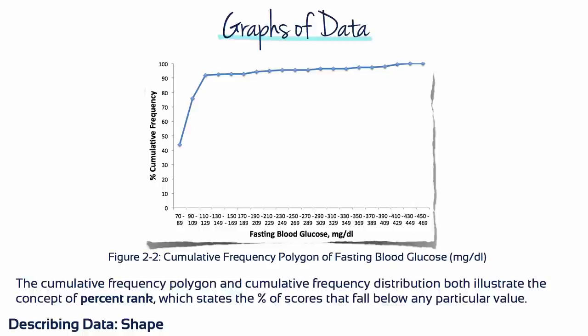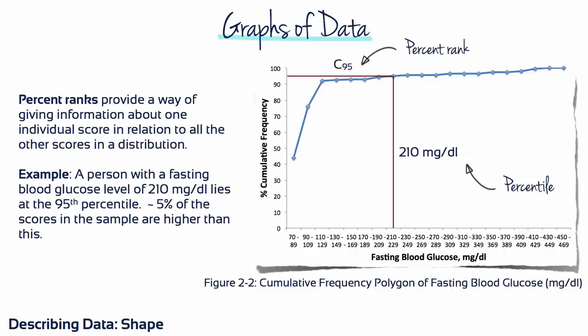The cumulative frequency polygon and cumulative frequency distribution both illustrate the concept of percent rank, which states the percentage of scores that fall below any particular value. Percent ranks provide a way of giving information about one individual score in relation to all the others in a distribution.